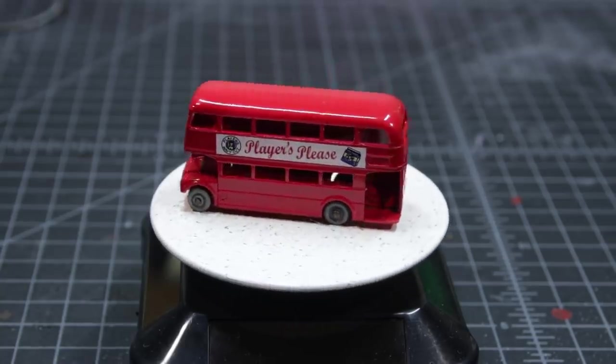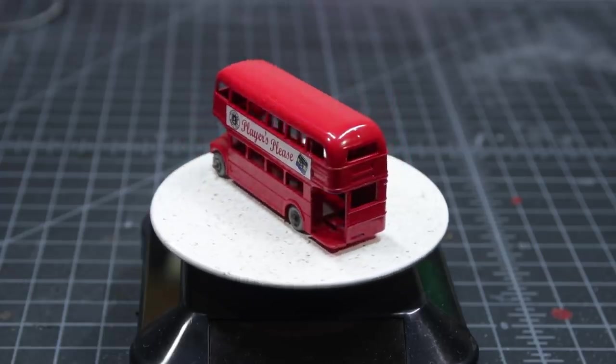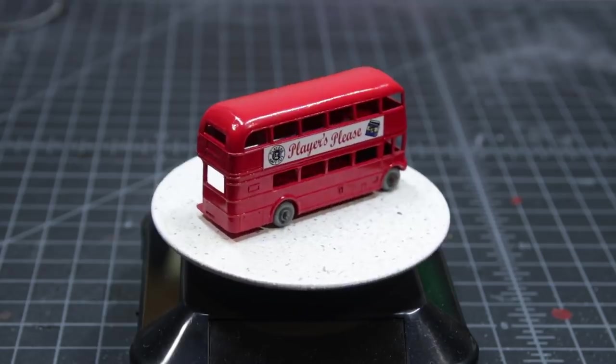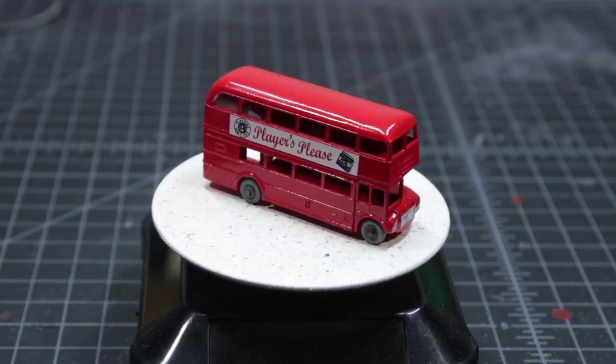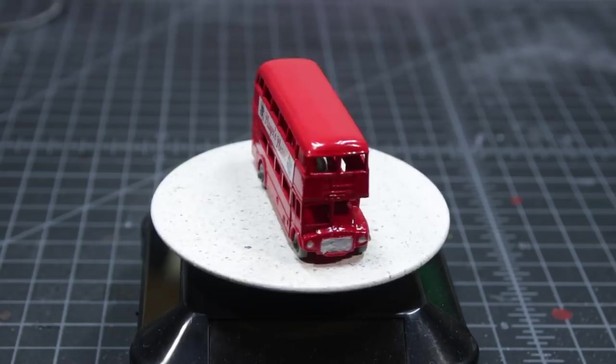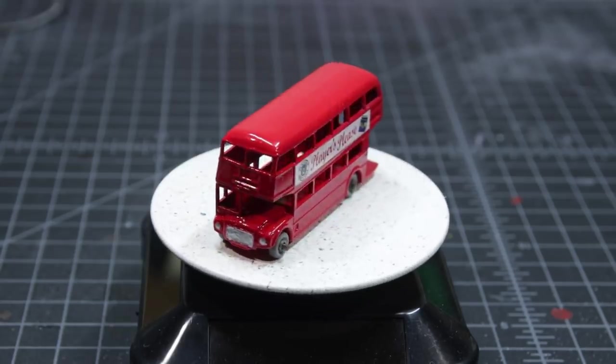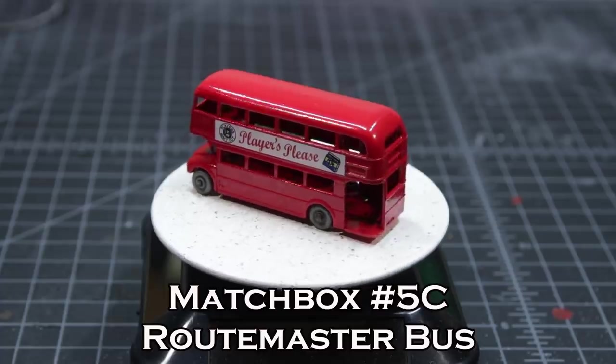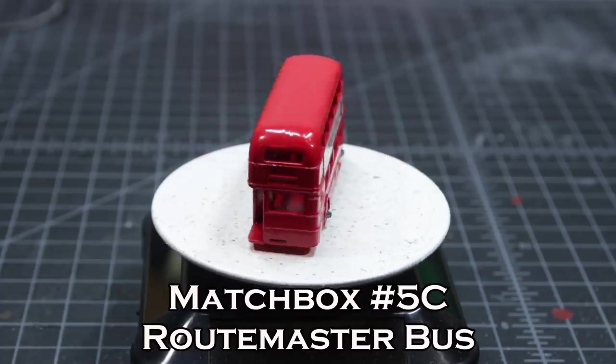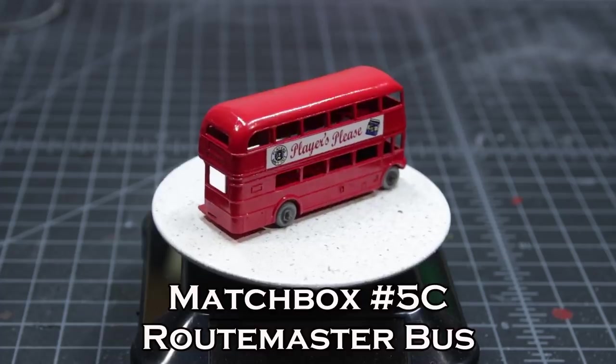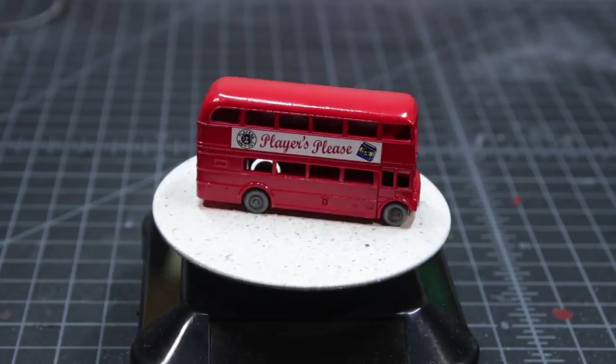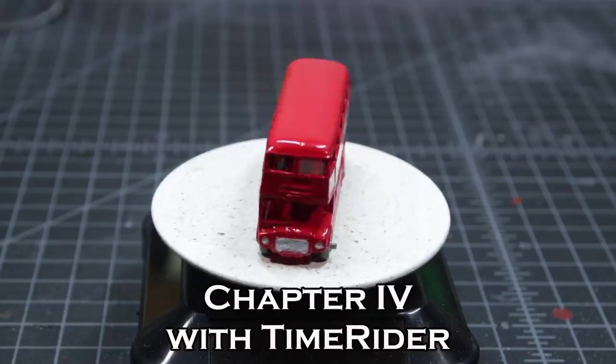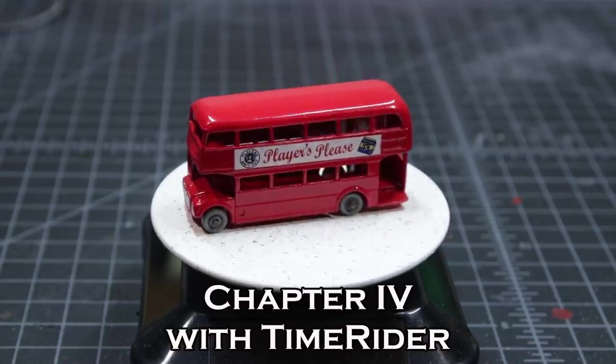It's pretty straight but it's not. It's still got a little bit of a cant on the front there that I thought I had gotten rid of. It was a very challenging restoration. But anyway, it's the RouteMaster 5C and this is Time Rider at Chapter 4 and at the request of many of my subscribers we'll leave the light on for you. Thank you. Thanks for watching.